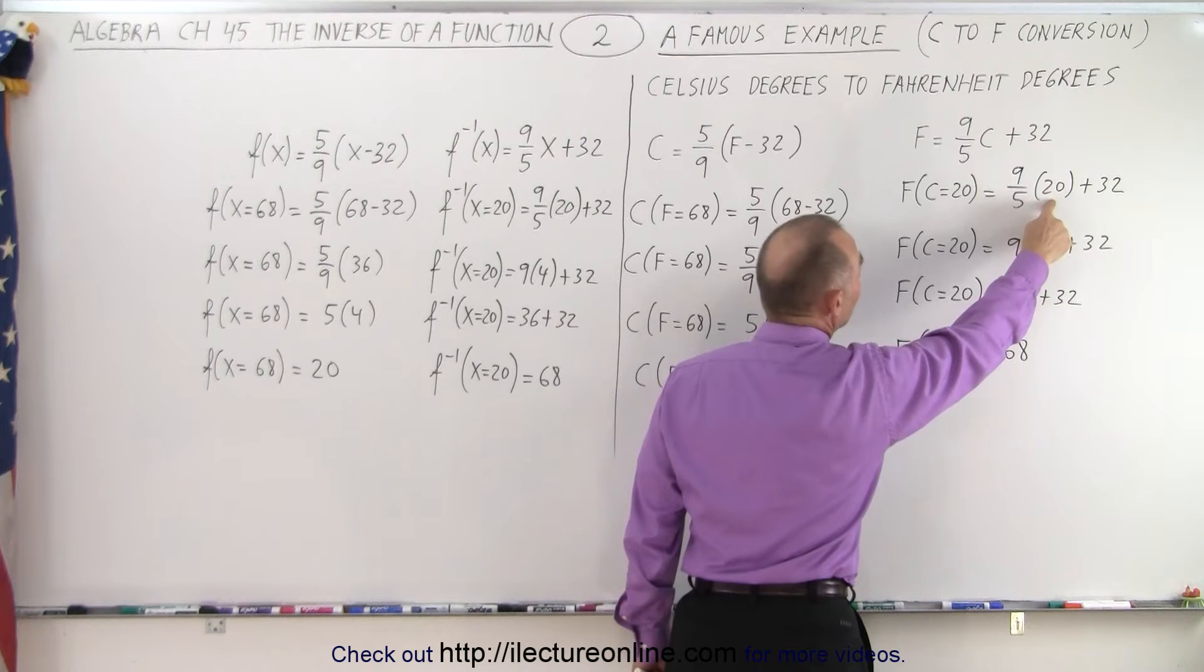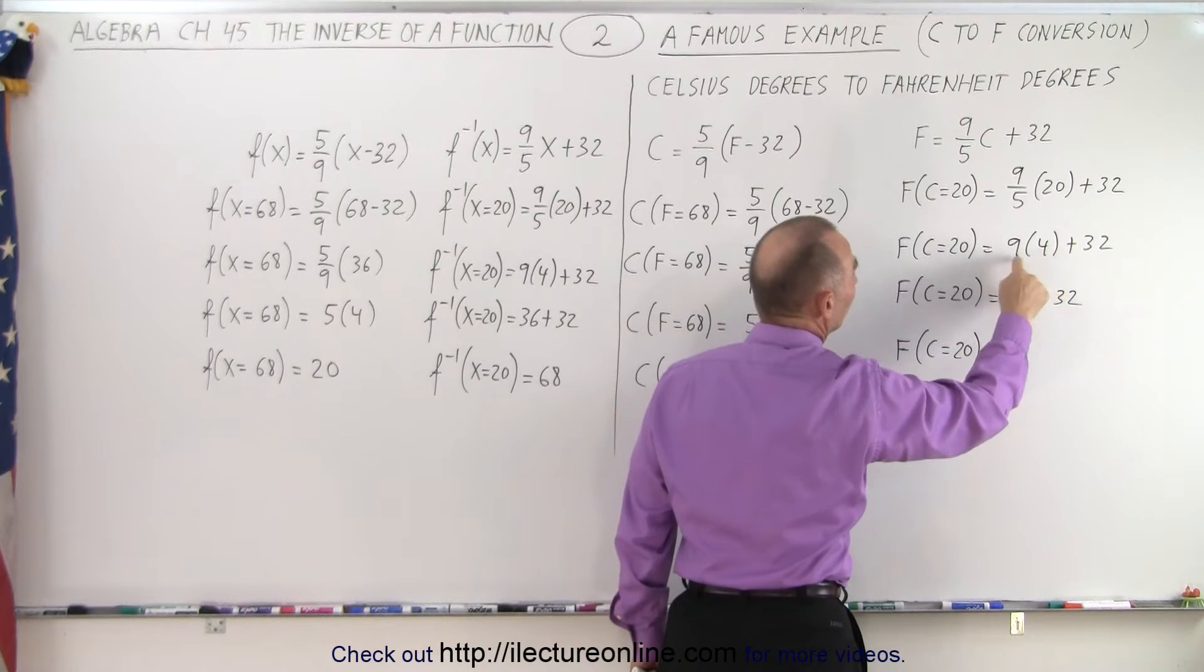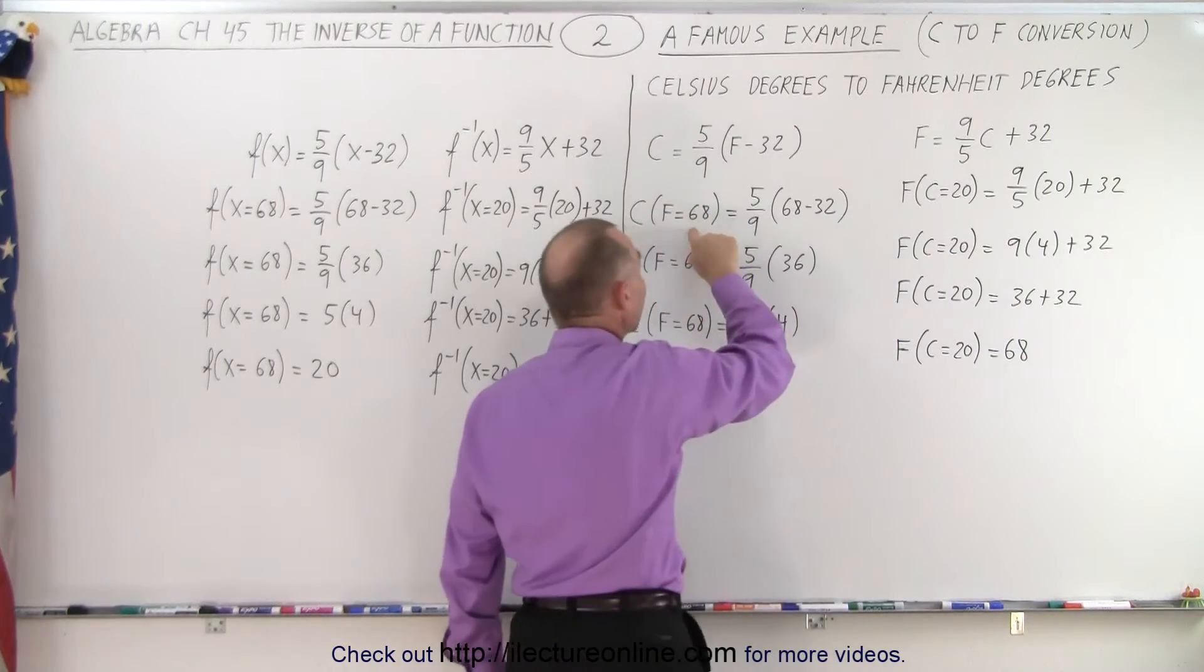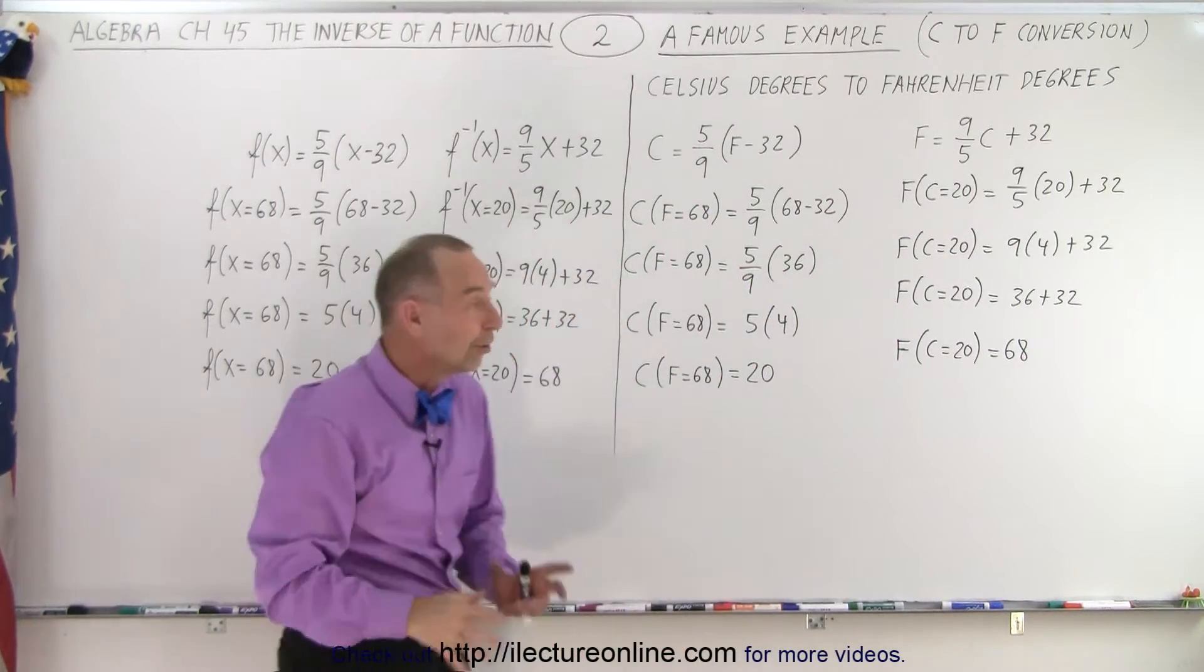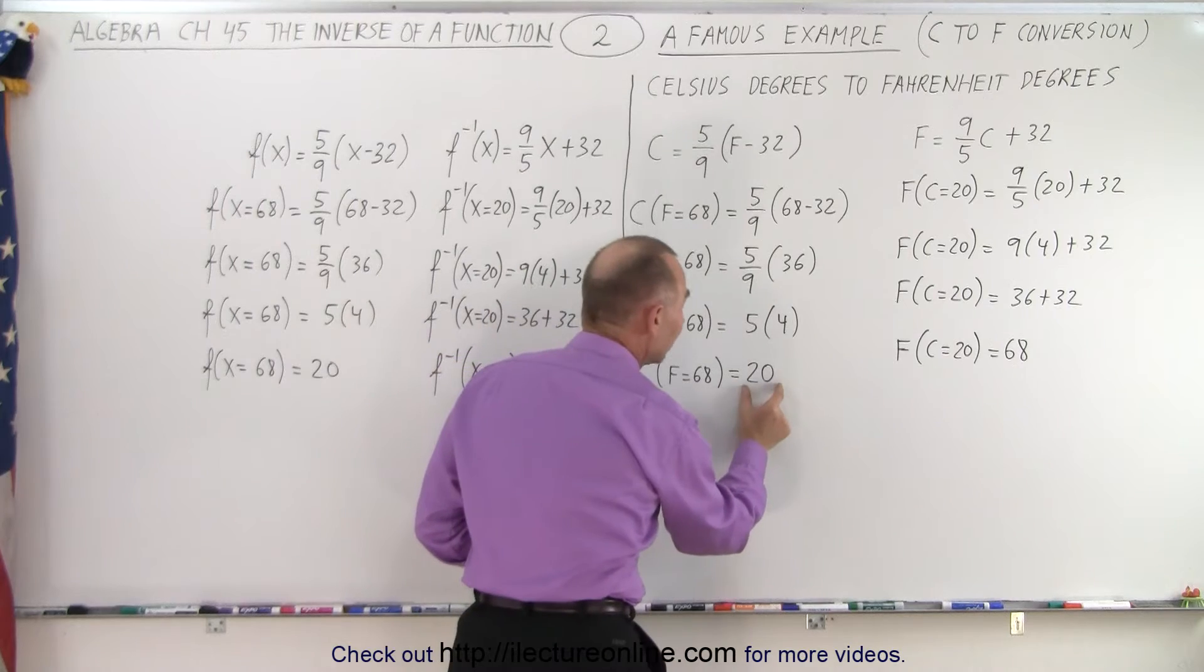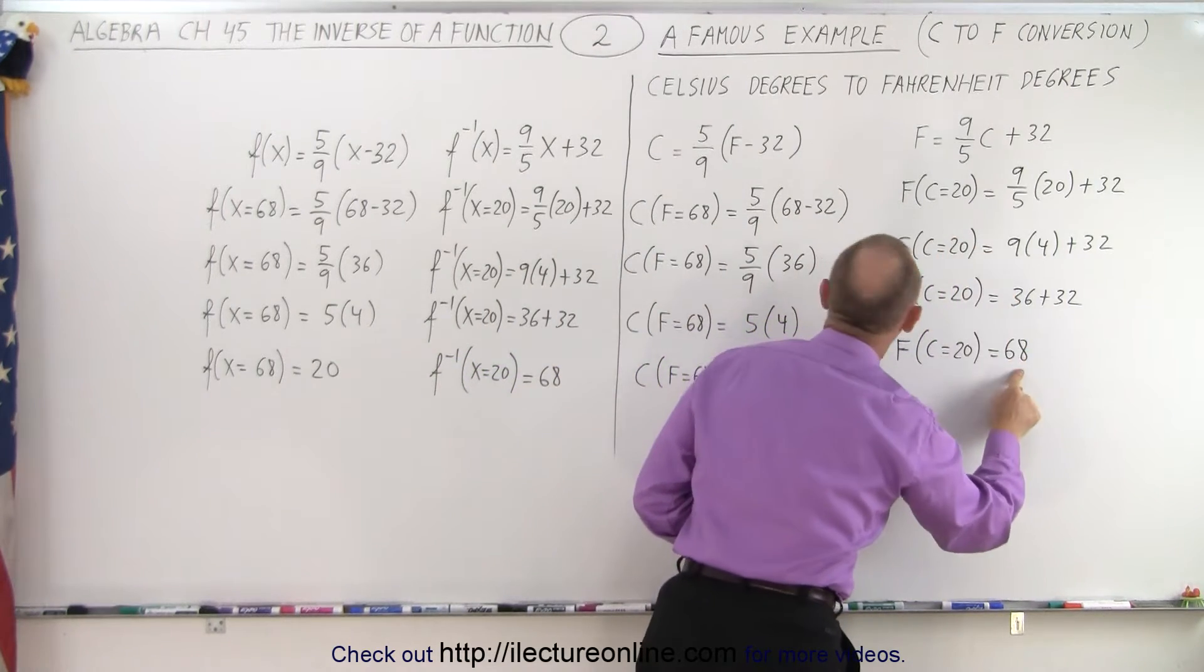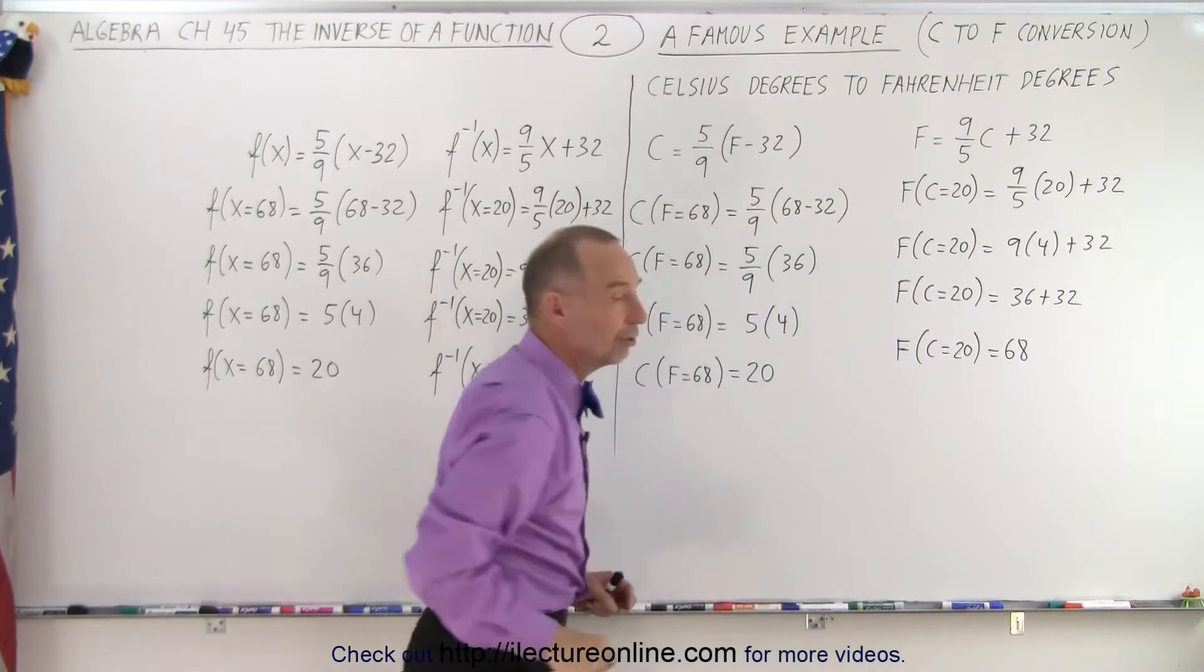We plug in 20. 20 divided by 5 is 4. 9 times 4 is 36. 36 plus 32 is 68, which is the value we got in here in the first place. So you can see you plug in what you obtained from the initial function into your inverse, and that gives you back the number that you started with in your initial function.